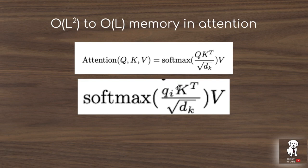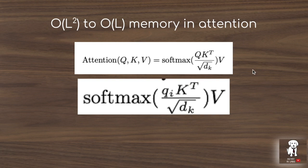The first idea is that instead of multiplying all queries by all keys at once, you index queries individually as q_i — individual vectors of dimension 1 by d_k. When you do 1 by d_k times d_k by length, the result is 1 by length, avoiding having to intermediately store the length-by-length matrices. This individual indexing is the first memory reduction.